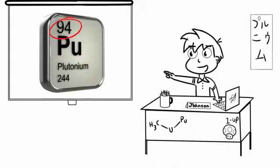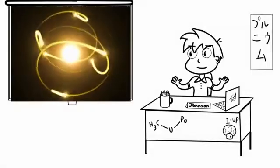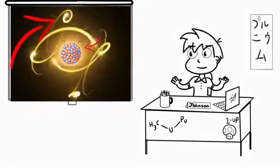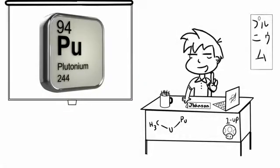Plutonium has 94 protons, which is also known as its atomic number. Most elements have the same number of protons as they do electrons, and plutonium is no exception with 94. Plutonium's atomic mass is 244.